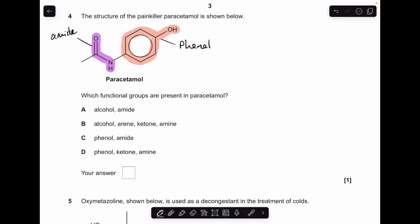Number four. I've highlighted the functional groups in paracetamol, and we've got an amide and a phenol, so the answer was C.